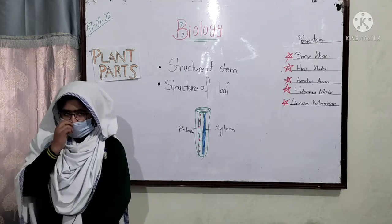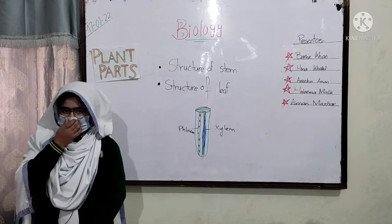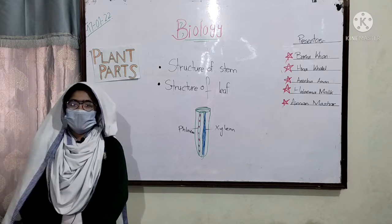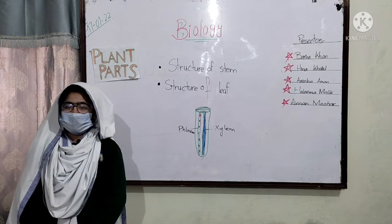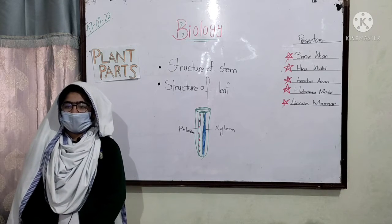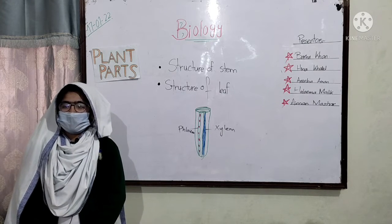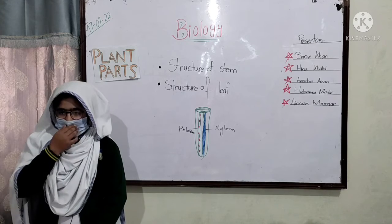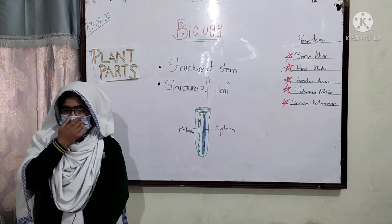Many plants such as mustard have a vascular cuticle around the stem to reduce water loss. Bark also reduces water loss in plants.